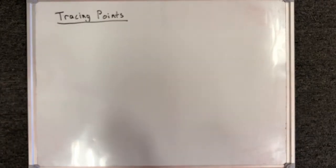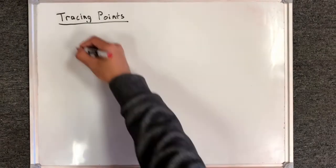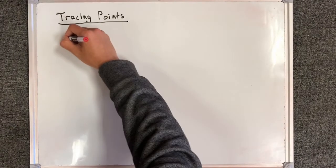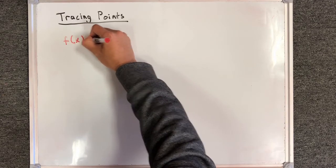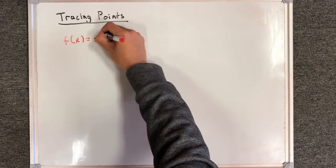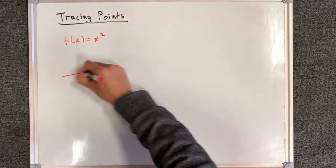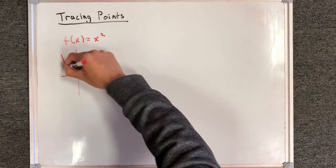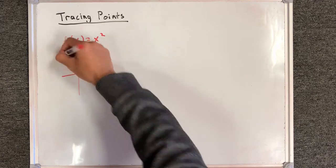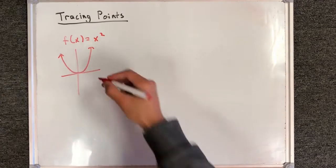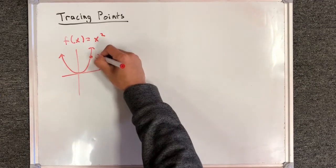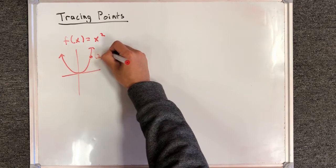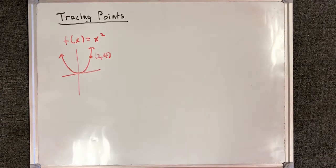Hello everyone, today we're going to be talking about tracing points. Let's say that we were given a function f of x equals x squared — that's a very standard parabola — and for whatever reason we are very interested in this point 2 comma 4, and we want to know what happens to this point at all times.